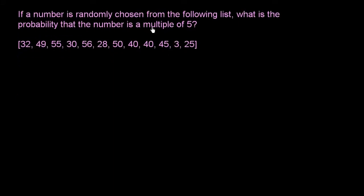If a number is randomly chosen from the following list, what is the probability that the number is a multiple of 5? So once again, we want to find the fraction of the total possibilities that meet our constraint, and our constraint is being a multiple of 5.